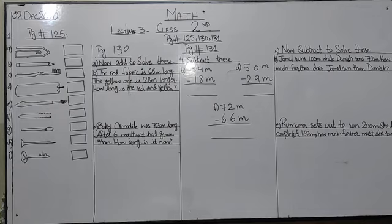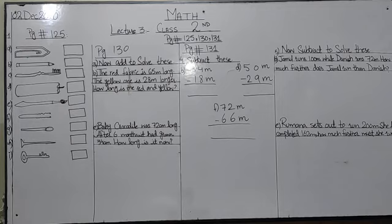Page number one twenty five is a very nice activity. It has different types of shapes: first is a shape, second pencil, third brush, fourth candle, fifth paintbrush, sixth toothbrush, seventh hair pin, eighth matchbox, and ninth a nail (keel).